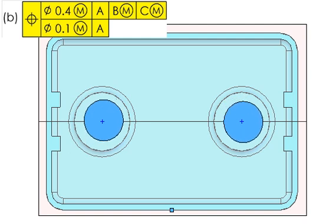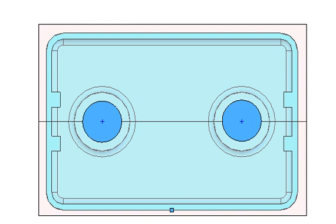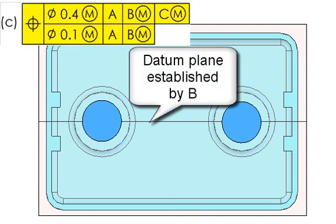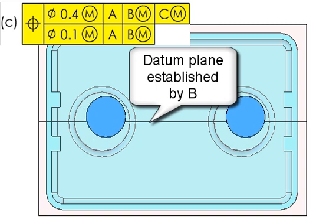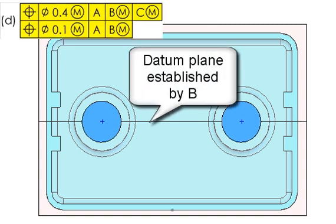By bringing down datum feature B, though, we can stop this rocking. So the pattern must now be within .1 to each other, perpendicular to A, and the orientation of the pattern cannot be off by more than .1. They can still move around .4, however.